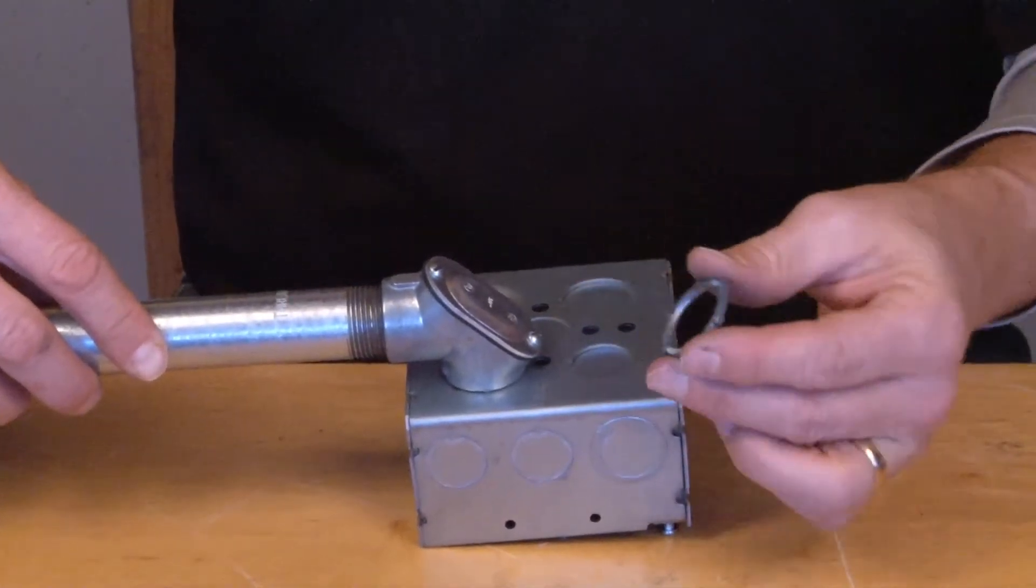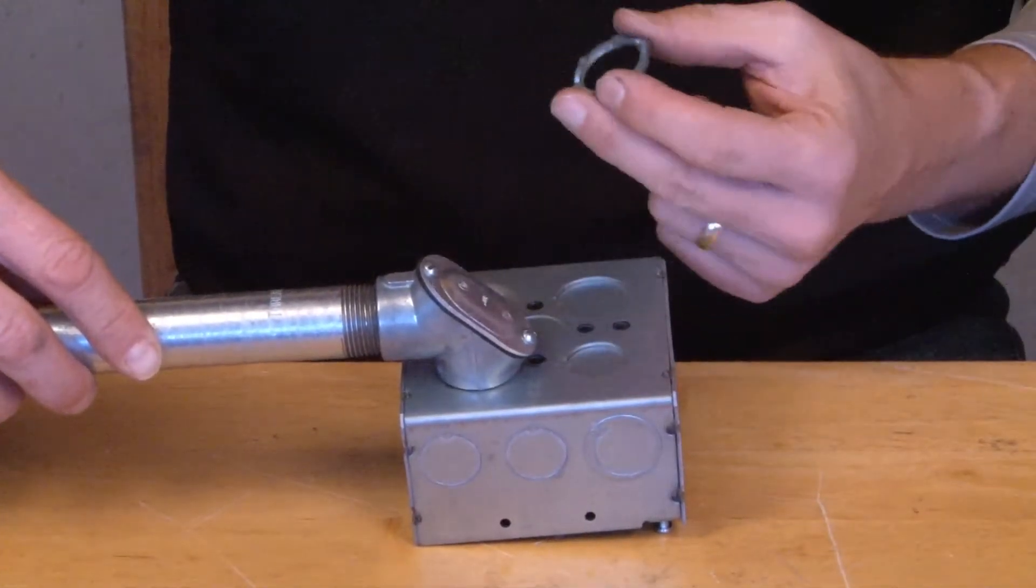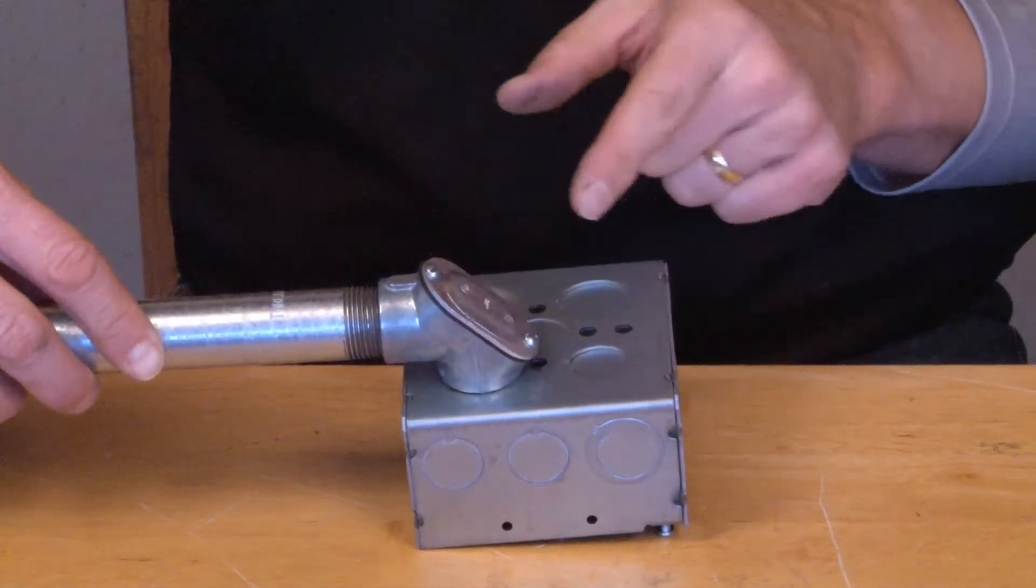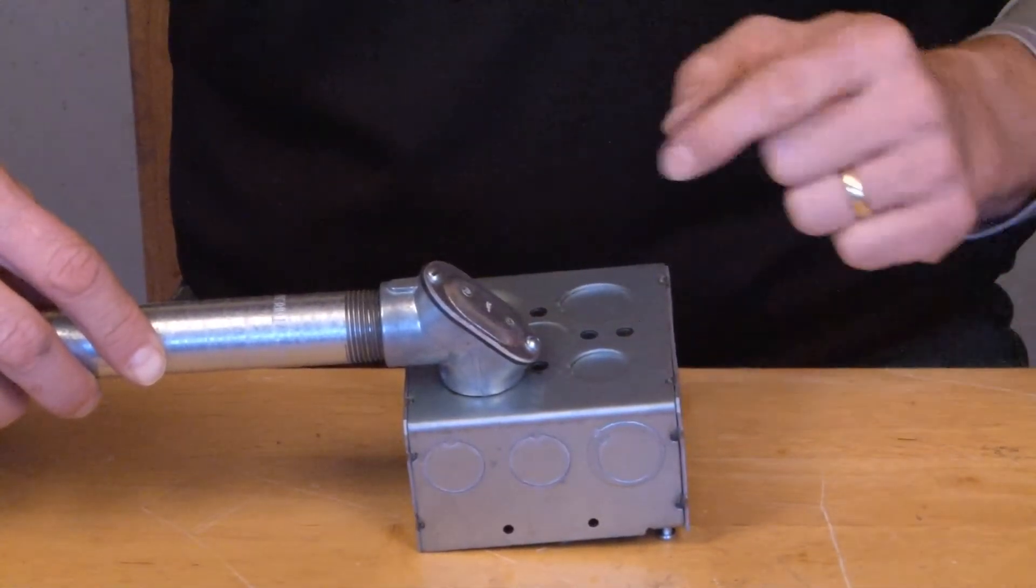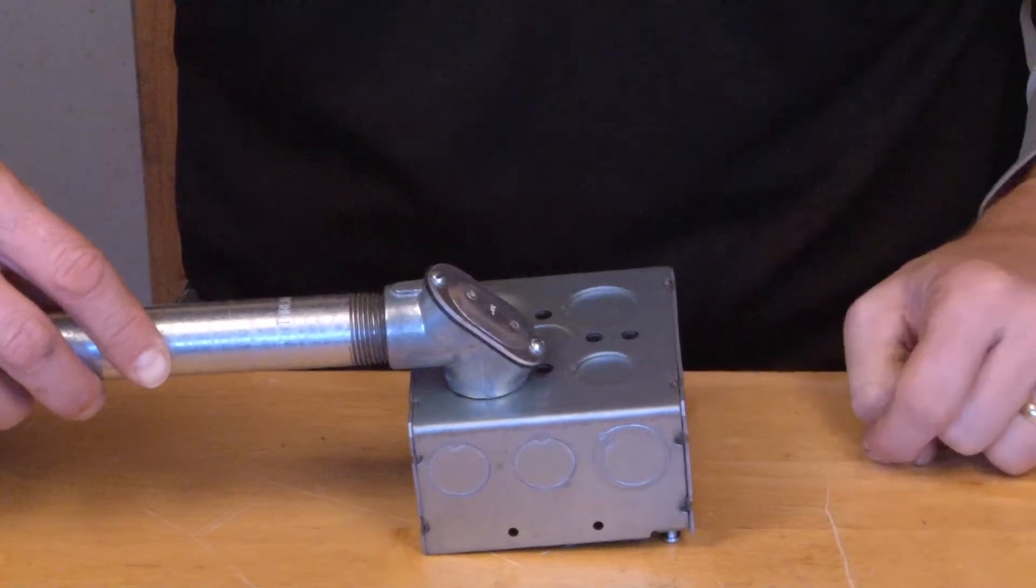All you need to do is reach inside the box, reattach the lock nut securing it down. You've got a perfect 90 degree turn and you can pull your wires and feed them into the junction box.